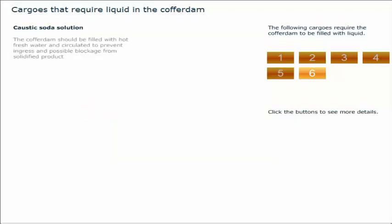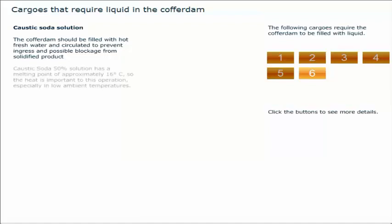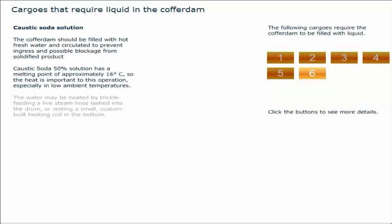The cofferdam should be filled with hot fresh water, and circulated to prevent ingress and possible blockage from solidified product. Caustic soda 50% solution has a melting point of approximately 16 degrees Celsius, so the heat is important to this operation, especially in low ambient temperatures. The water may be heated by trickle feeding a live steam hose lashed into the drum, or resting a small, custom-built heating coil in the bottom.